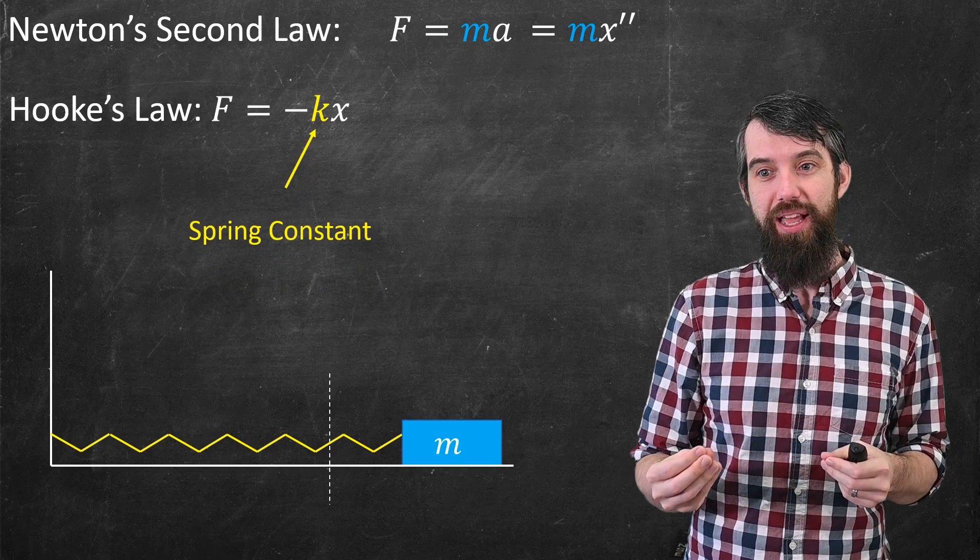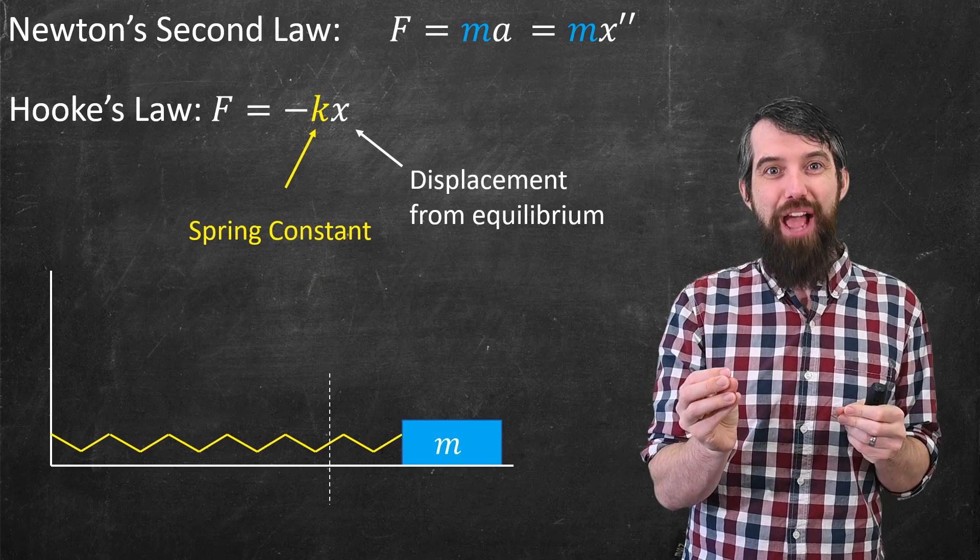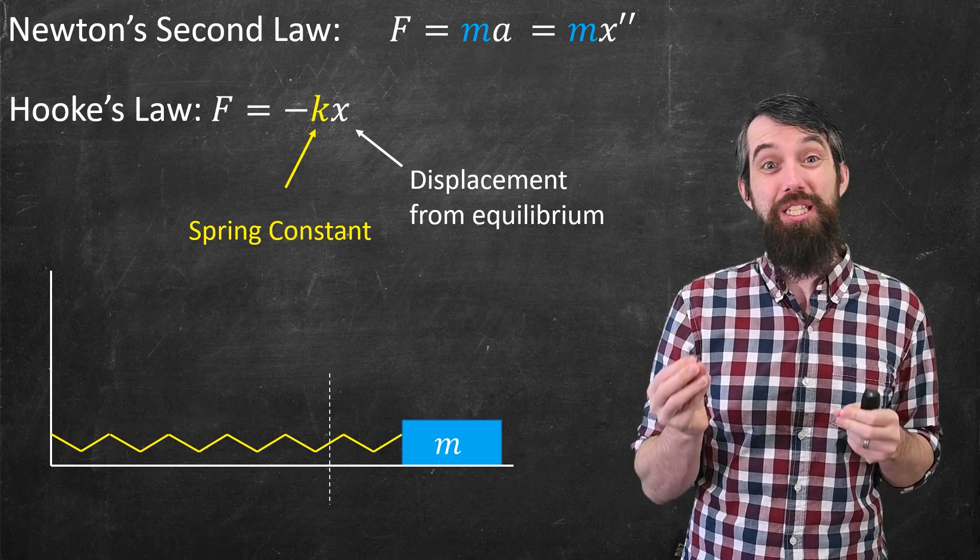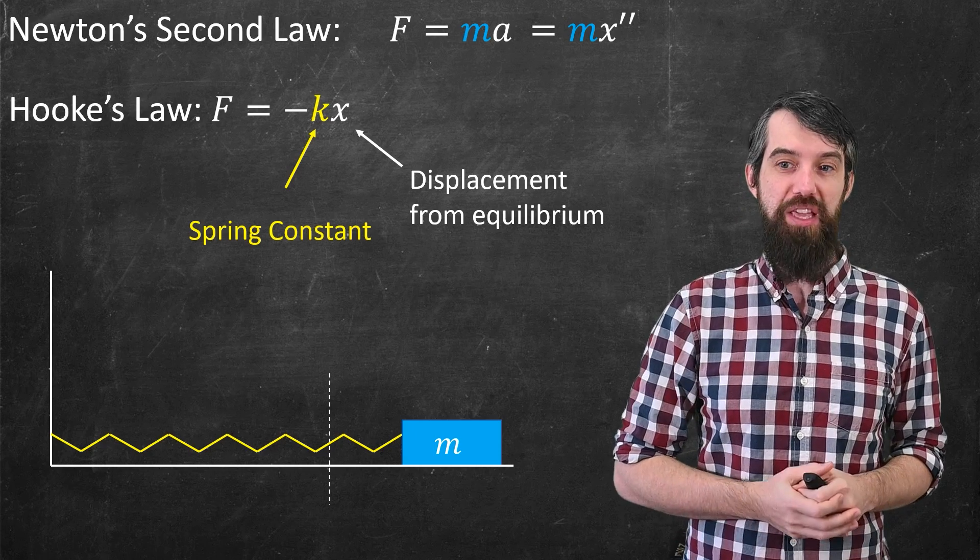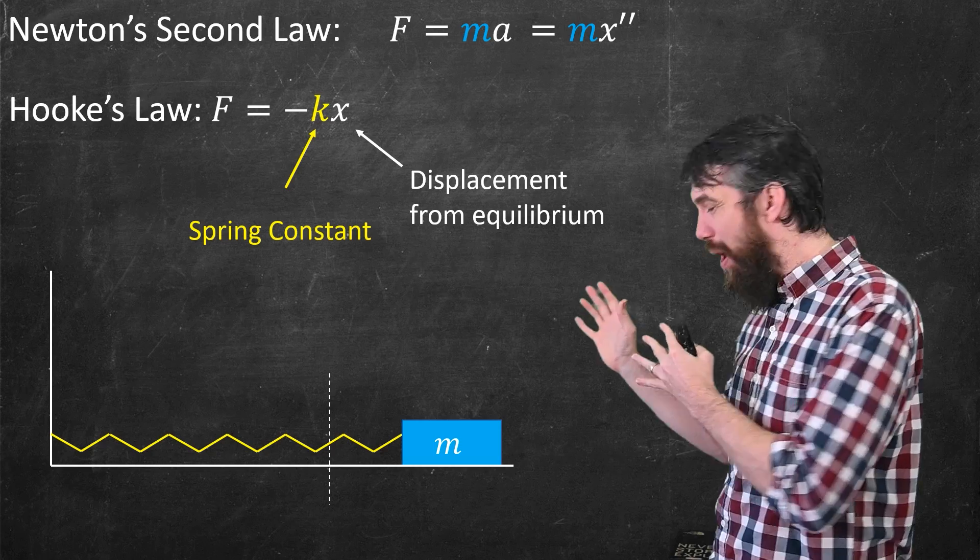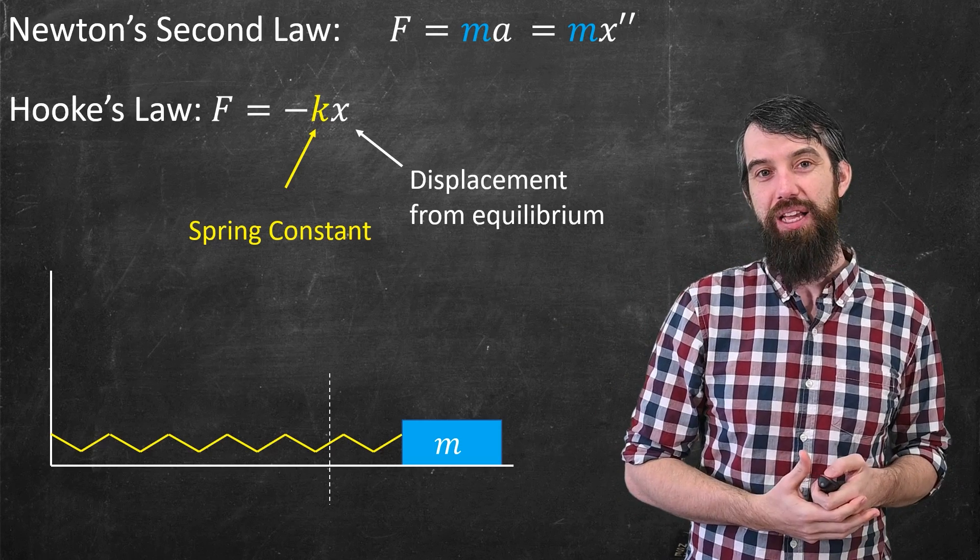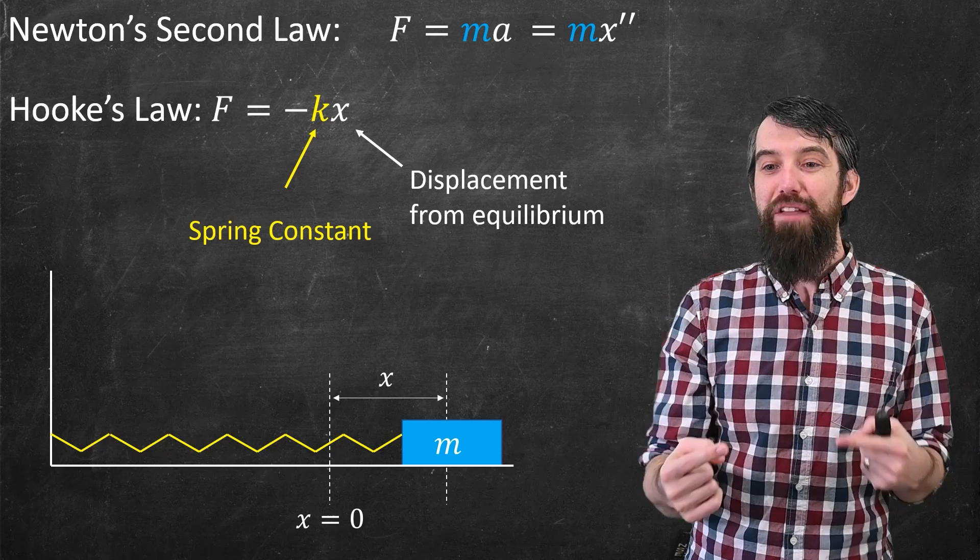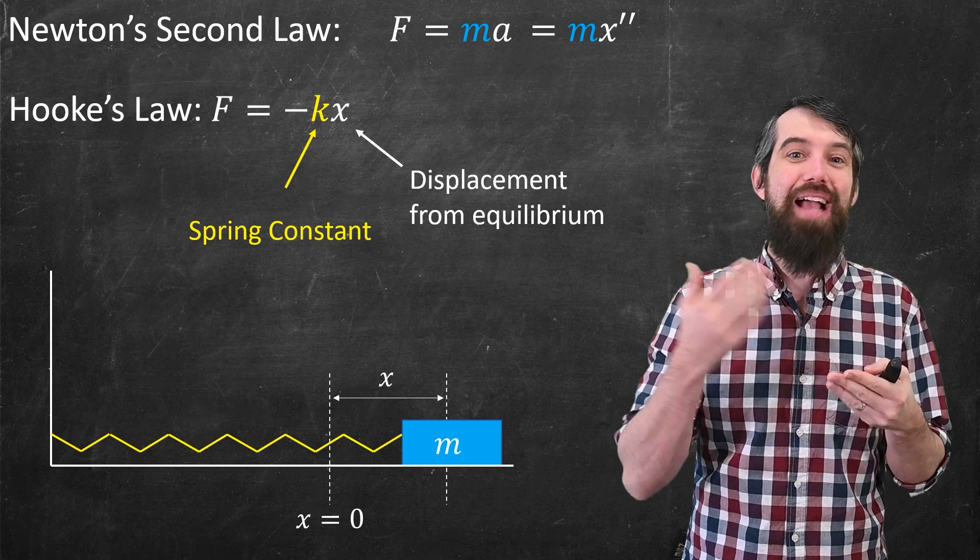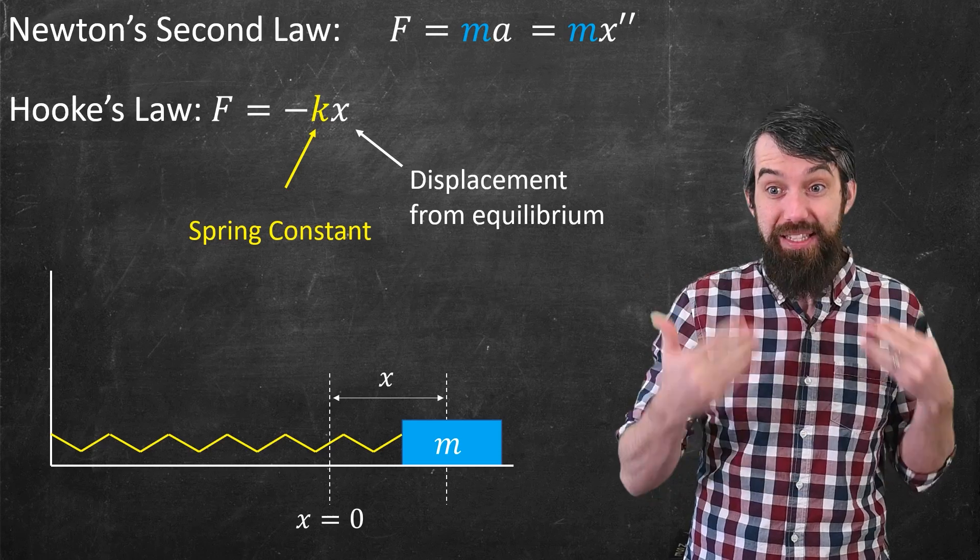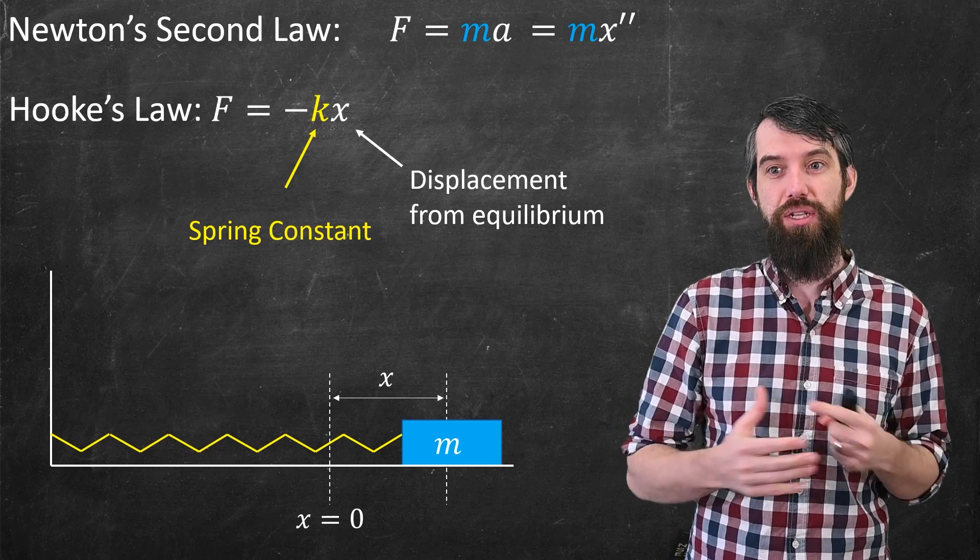And then x here, I represent it as the displacement, but specifically it's the displacement from the equilibrium. So I have this one vertical line here, which was where the spring would like to be at rest. And if I move away from that, I get a displacement of x from x equal to zero being that equilibrium position. That's the x that we're measuring specifically in Hooke's law.